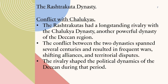Conflict with Chalukyas: The Rashtrakutas had a long-standing rivalry with the Chalukya dynasty, another powerful dynasty of the Deccan region. The conflict between the two dynasties spanned several centuries and resulted in frequent wars, shifting alliances, and territorial disputes. The rivalry shaped the political dynamics of the Deccan during that period.